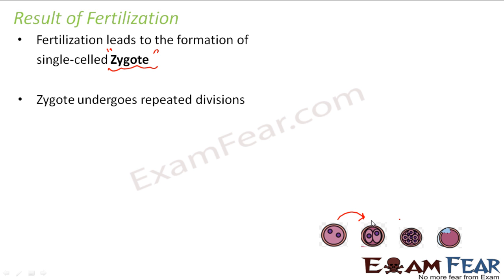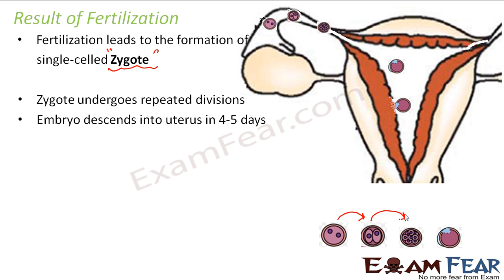With more and more division, more cells are produced inside. By repeated division, the zygote forms an embryo. Here in this picture you can see fertilization happens, a zygote is formed, then the zygote undergoes further divisions. The embryo then descends into the uterus, moving gradually towards it, because the baby has to implant itself in the uterus. The embryo descends into the uterus in 4 to 5 days.